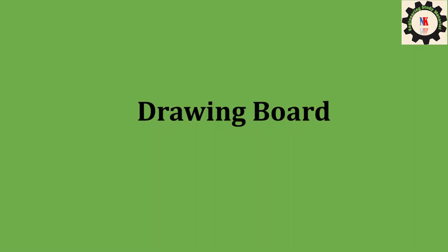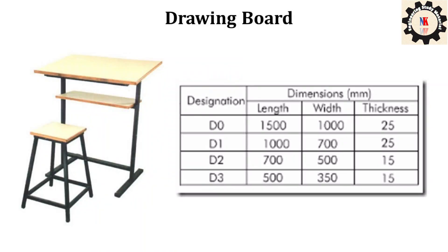Drawing board: the D2 or D3 drawing boards are usually used in polytechnics and engineering colleges. Drawing boards are made of well-seasoned softwood such as oak or pine. The standard sizes of drawing boards as per BIS 1444-1977 are given in the table.